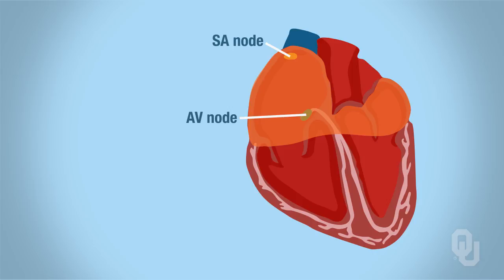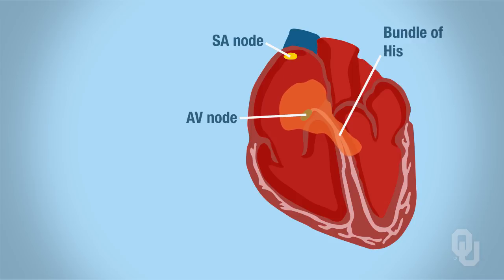Now from the AV node, the action potentials are going to continue to spread. From the AV node, they spread down the bundle of His, and then they spread down through the right and left bundle branches, and then they reach the apex of the heart—the tip, the bottom of the heart, not the top.